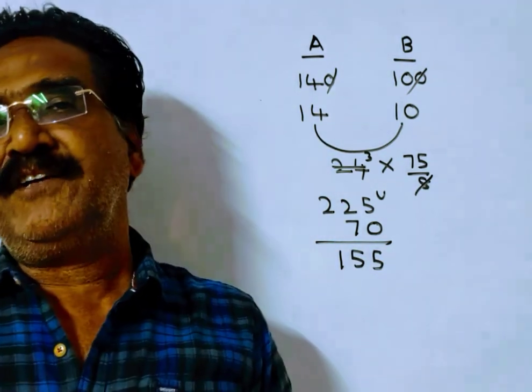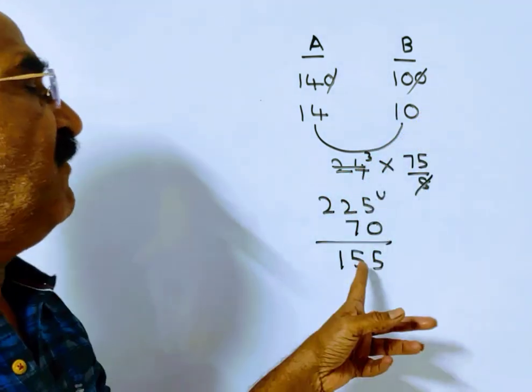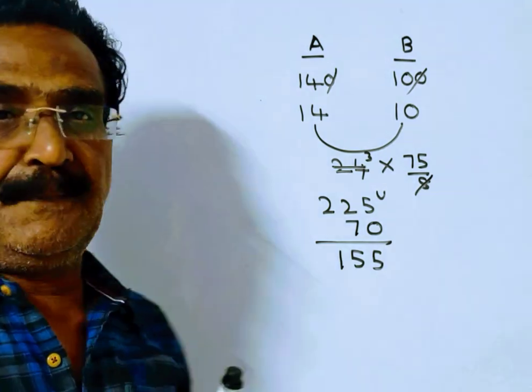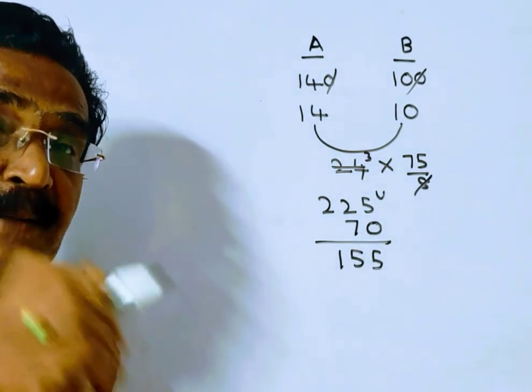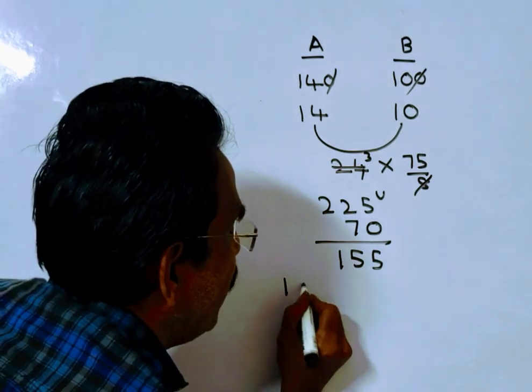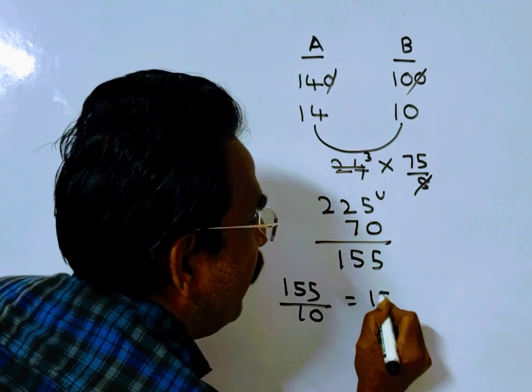Friends, these 155 units of work can be completed by B in 155 by 10. B can complete 10 units of work per day. So, the remaining 155 units can be completed by B in 155 divided by 10. That is equal to 15.5.